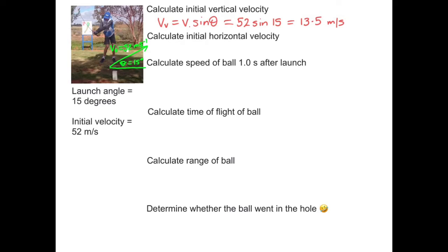The horizontal component can be calculated in a similar way. VH equals V times cos theta equals 52 times by the cosine of 15 which is equal to 50.2 metres per second. Sorry, I'm jumping between notation there, but we should be comfortable with that at year 12.